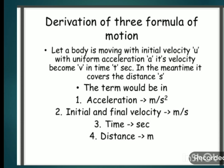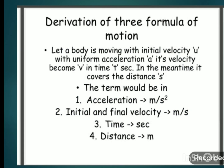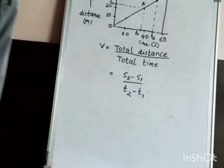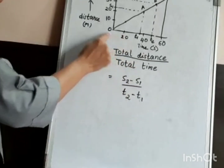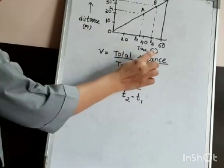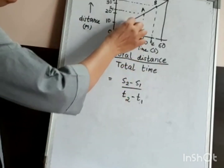From this graph we can derive three equations of motion. In this setup, the initial velocity of the object is u, final velocity is v, it is traveling with uniform acceleration a, in time interval t, and the distance covered is s. On the x-axis we have time and on the y-axis we have distance in meters, with time in seconds. For uniform motion, equal distance is covered in equal intervals of time.